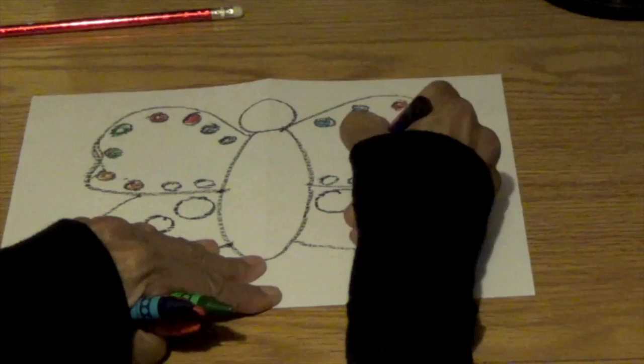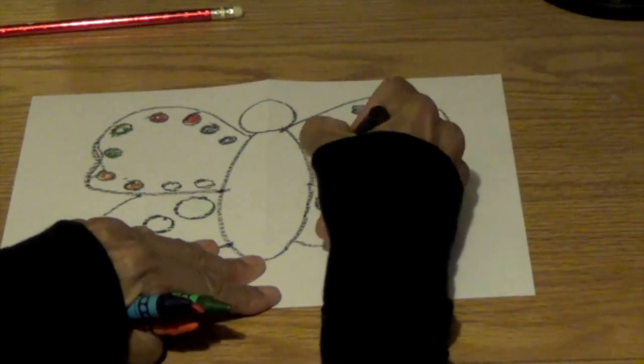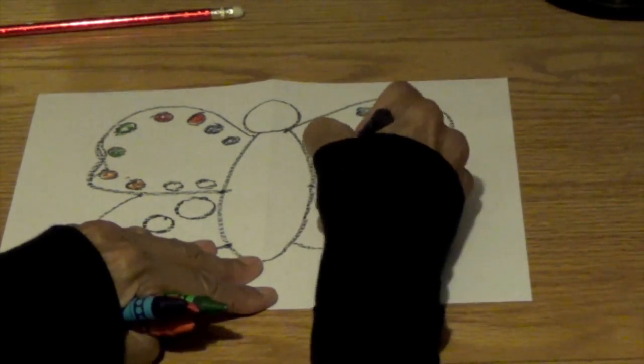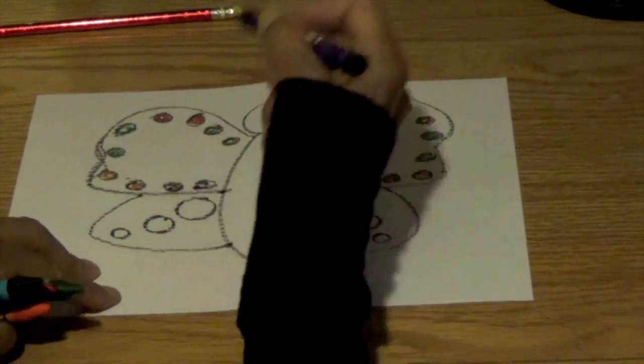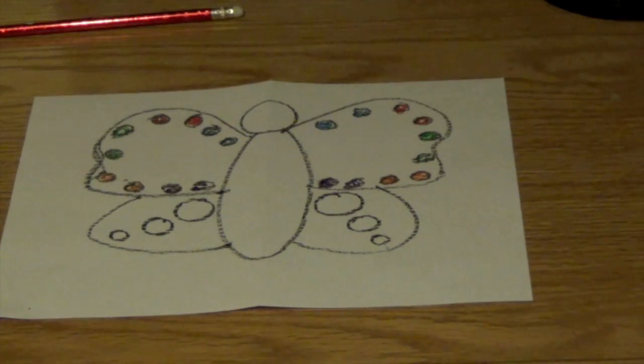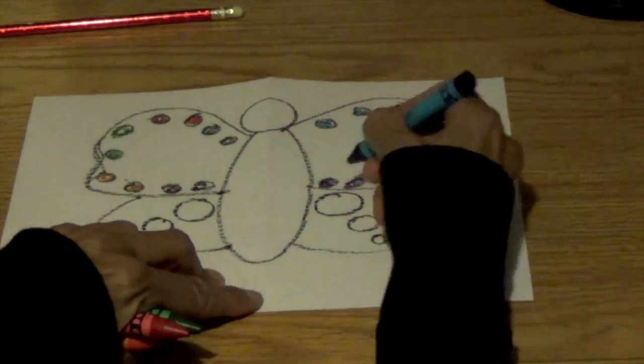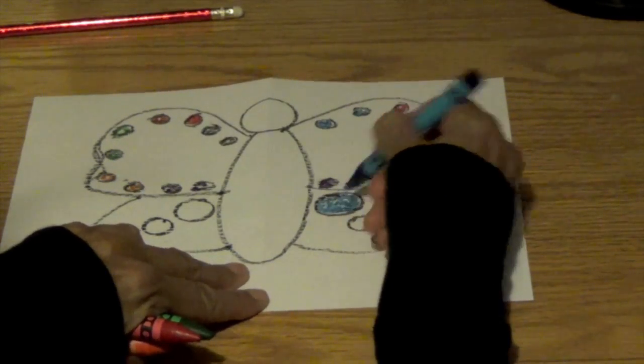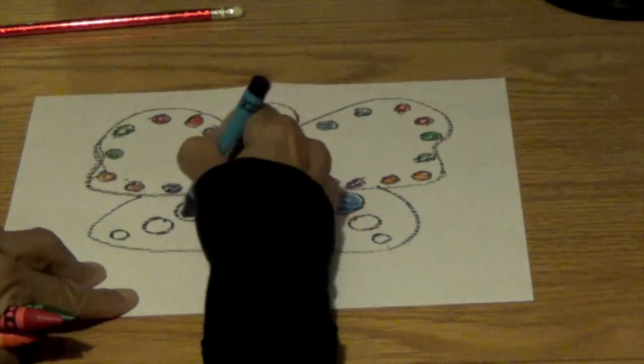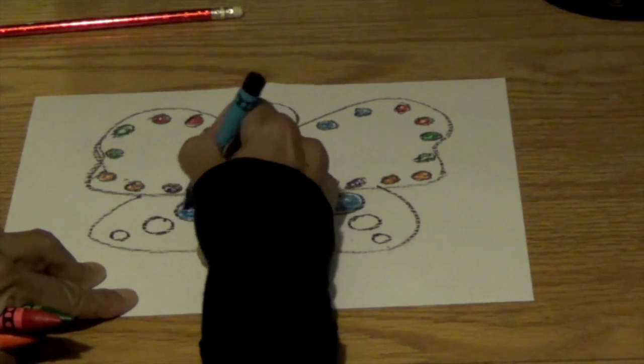Two purples. Purple, purple, purple here. Now let's go down the bottom part of the wing. I'm going to do a blue here. And a blue here. Blue.